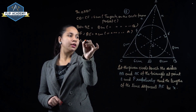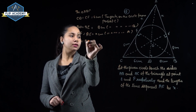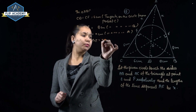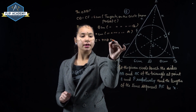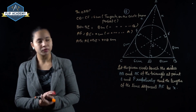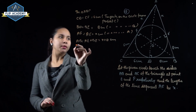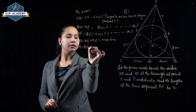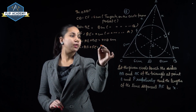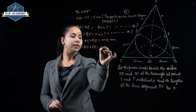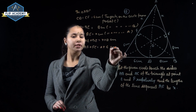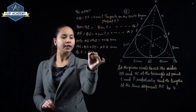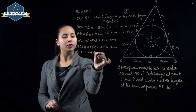AB equals AE plus BE, so AB equals X plus 8 cm. Similarly, AC equals AF plus CF, so AC equals X plus 6 cm. And BC equals 6 plus 8 equals 14 cm.